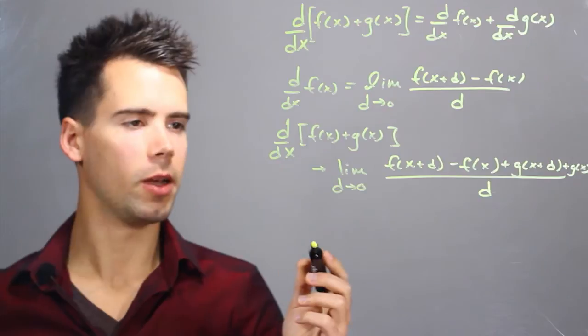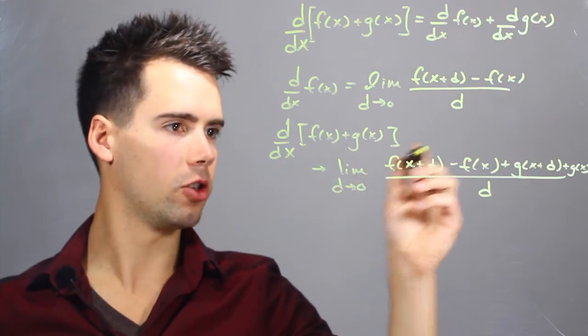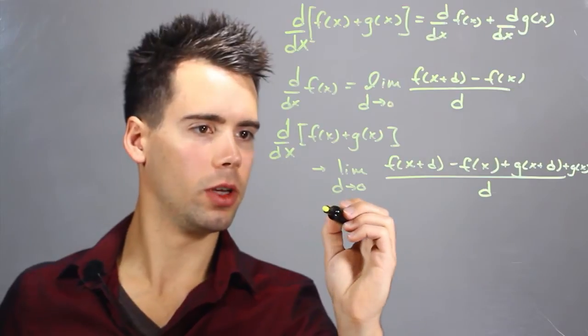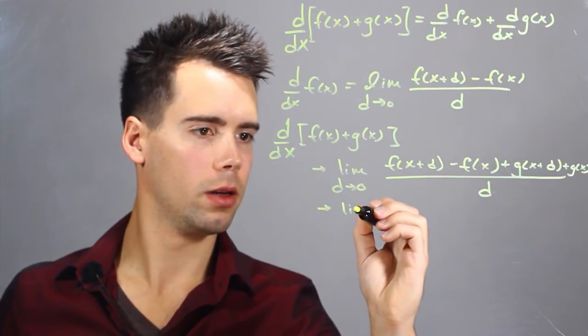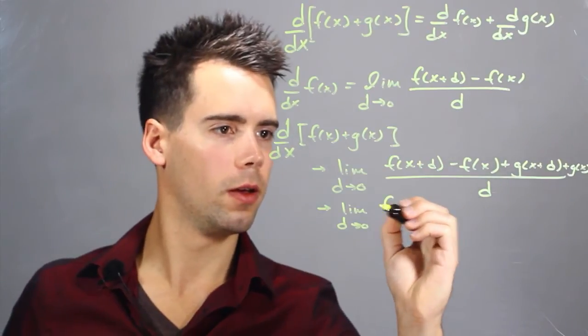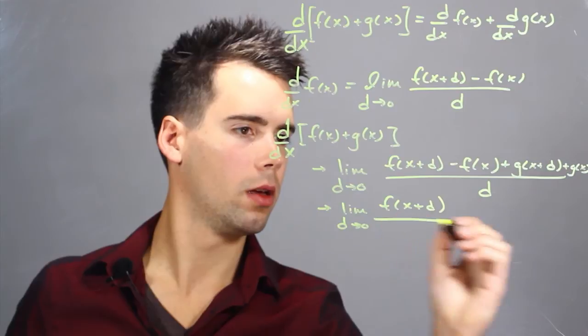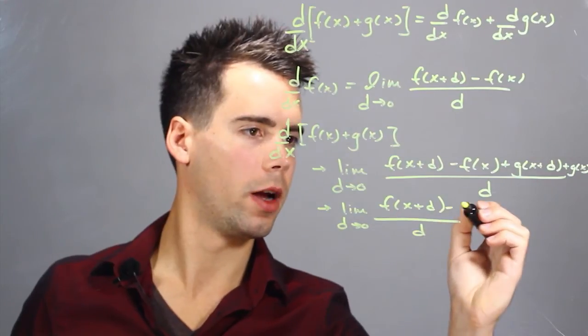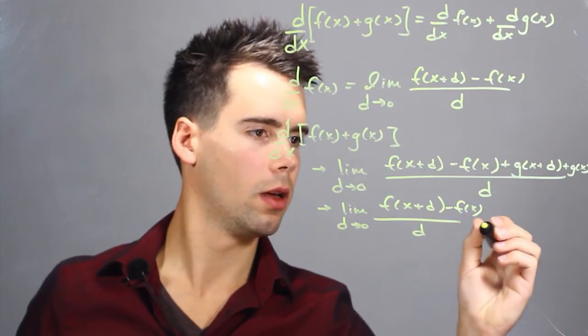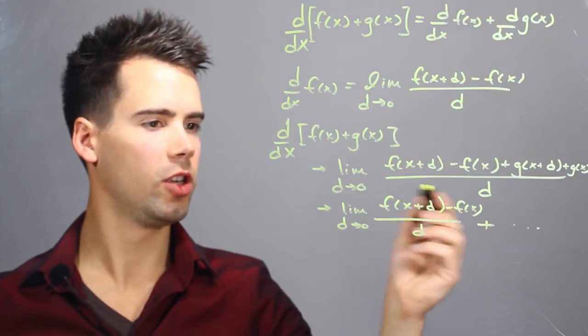Now by the definition of limits we can associate distributively the limit with each term and we find this simply goes to the limit as d approaches zero of f of x plus d minus f of x and you can see the second term is going to be the same thing except with g's.